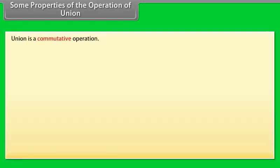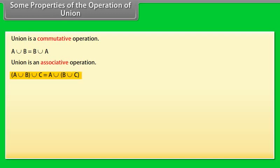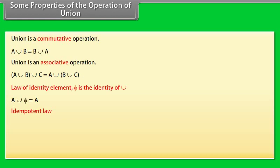Some properties of the operation of union: Union is a commutative operation, A union B equals B union A. Union is an associative operation, A union B union C equals A union B union C. Law of identity element: Phi is the identity of union, A union Phi equals A. The idempotent law: A union A equals A. Law of U: U union A equals U.